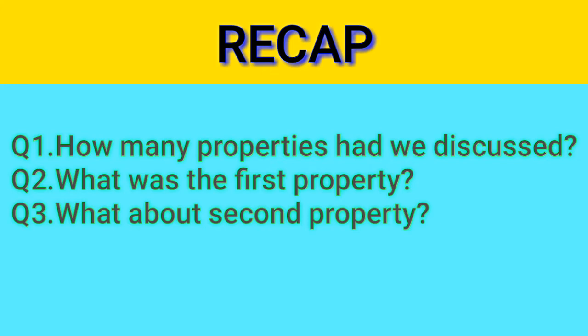Question number three: what about the second property? The answer is: if a number is divisible by two or more co-prime numbers, then that number is divisible by their product. For example, 24 is divisible by 3 and 4, which are co-primes, so 24 is also divisible by the product of 3 and 4, which is 12.